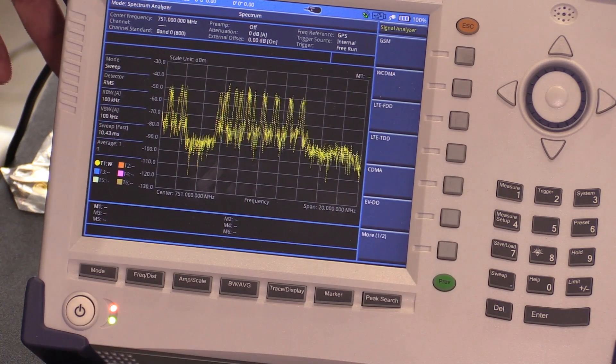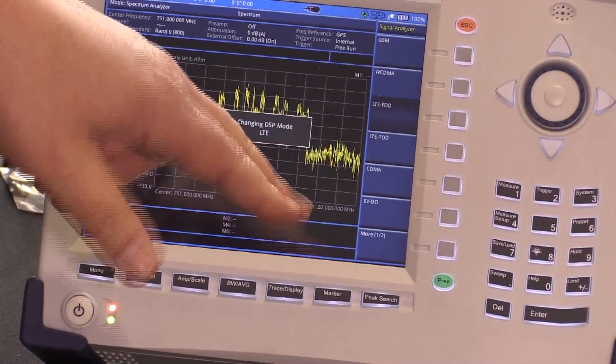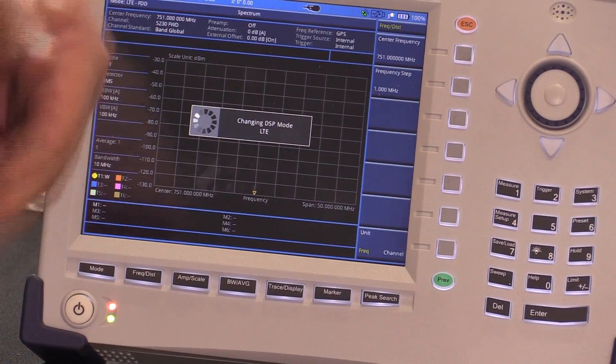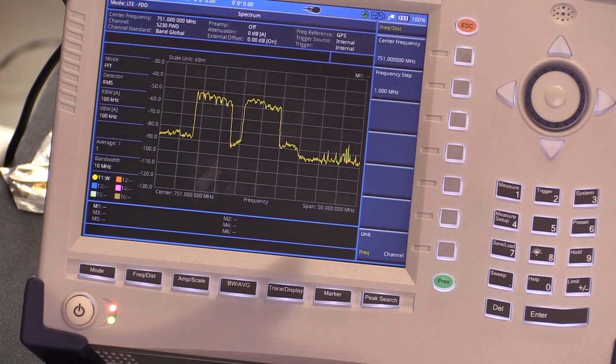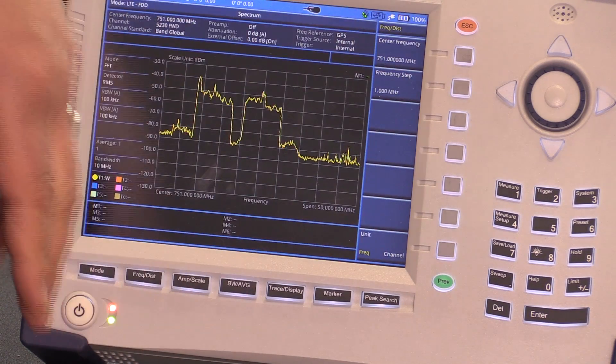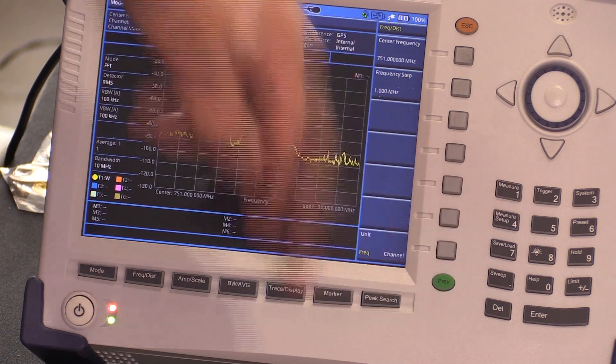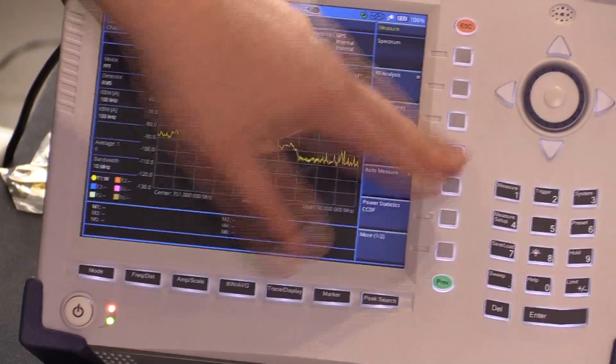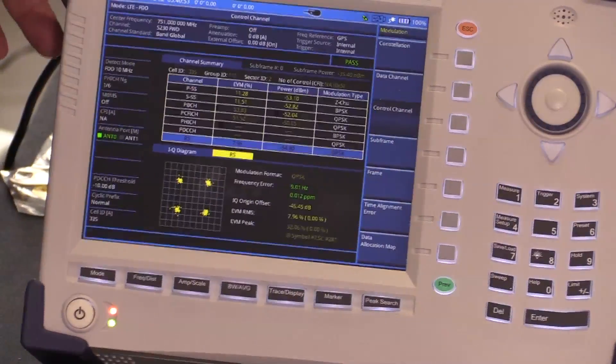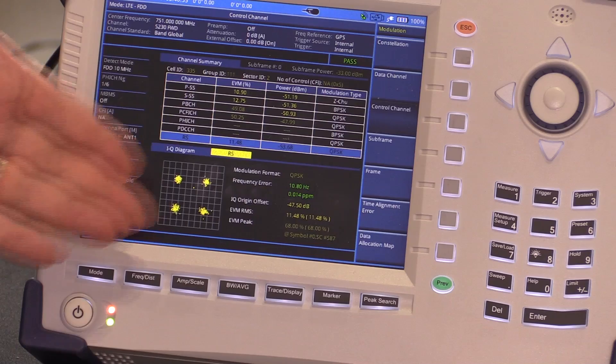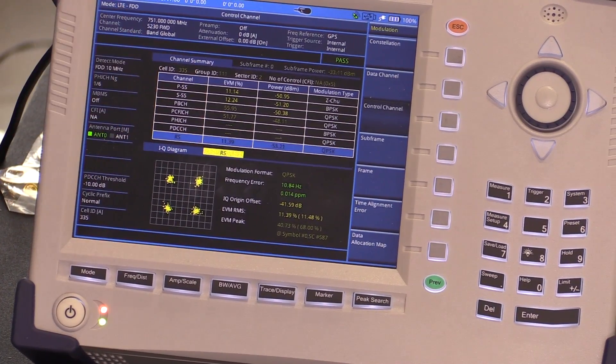Those measurements allow us to help troubleshoot and determine which antennas might be bad and where we have overlaps in coverage. I'll just bring up a quick modulation analysis screen. This shows the signal quality of some of the local DAS system antennas that are installed here in the stadium.